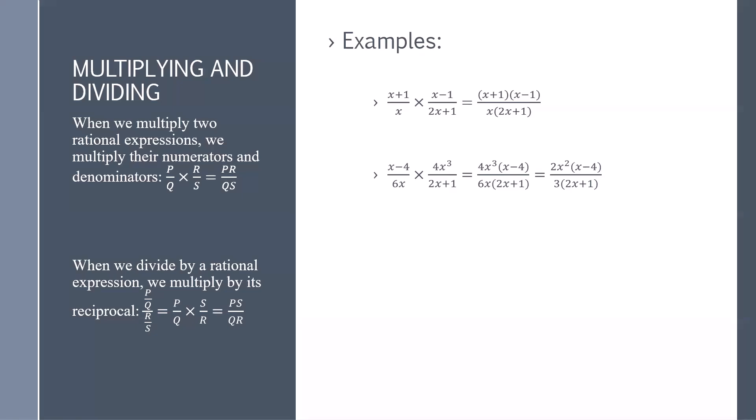x minus 4 divided by 6x times 4x cubed over 2x plus 1 is equal to 4x cubed times x minus 4 divided by 6x times 2x plus 1. We see straight away that both the 4 and the 6 have a factor of 2, and x cubed and x have a factor of x. So we can cancel those out and we're left with 2x squared times x minus 4 over 3 times 2x plus 1.